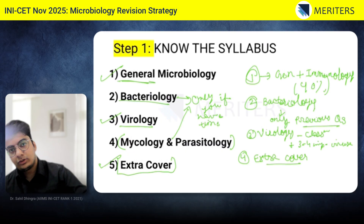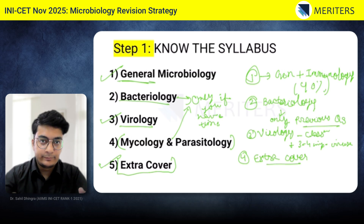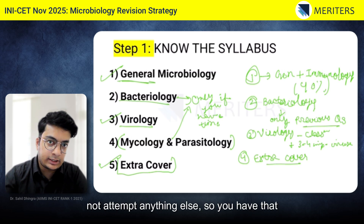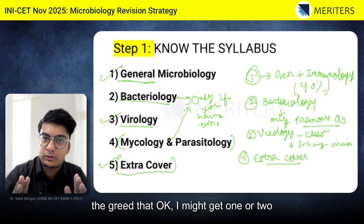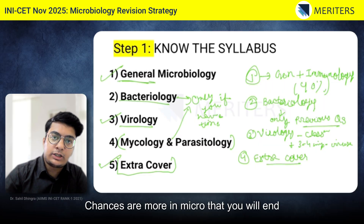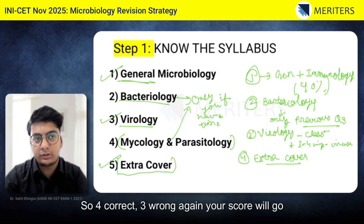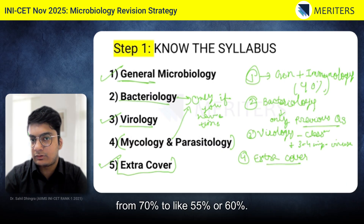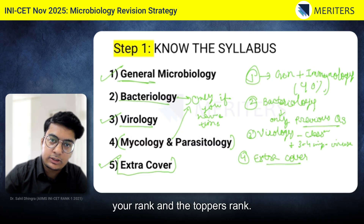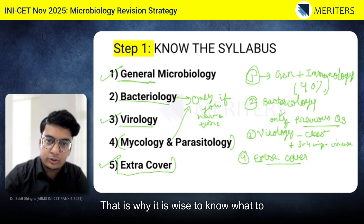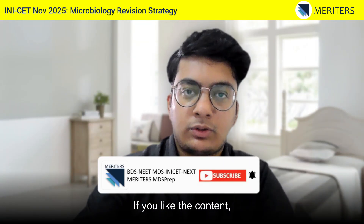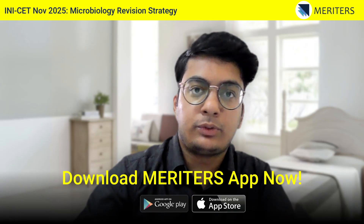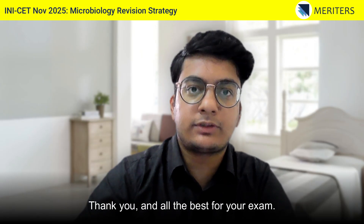The goal in micro is to get around 60% to 70% correct and not over-attempt. If you get 70% correct and do not attempt anything else, you have that 70% in the bank. But if you attempt two or three extra questions out of greed, chances are in micro that you will get all three wrong — your score drops from 70% to 55% or 60%, and that 10% will be the difference between your rank and the topper's rank. That is why it is wise to know what to attempt and what to leave in microbiology. If you like the content, subscribe on YouTube, follow us on Instagram, and download the Meritors app from the App Store or Play Store. Thank you and all the best for your exam.